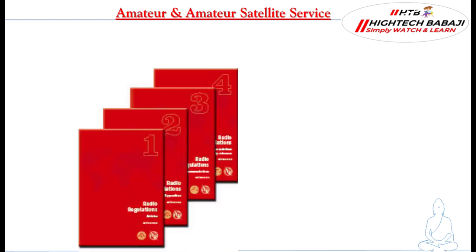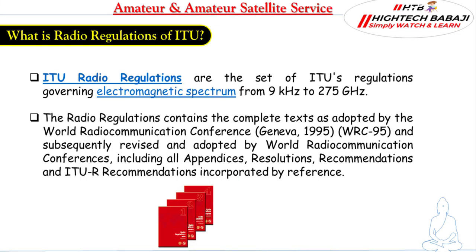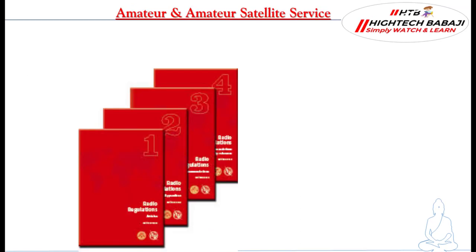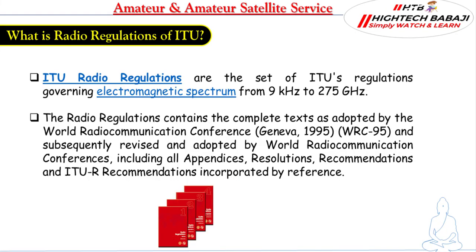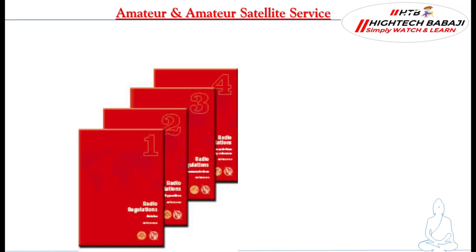ITU radio regulations are the set of ITU's regulations governing the electronic spectrum from 9 kHz to 275 GHz. The radio regulations contain the complete text as adopted by the World Radio Communication Conference, which was held in Geneva in 1995 and known as WRC 95, and subsequently revised and adopted by subsequent World Radio Communication Conferences, including all appendices, resolutions, recommendations, and ITU-R recommendations incorporated by reference.